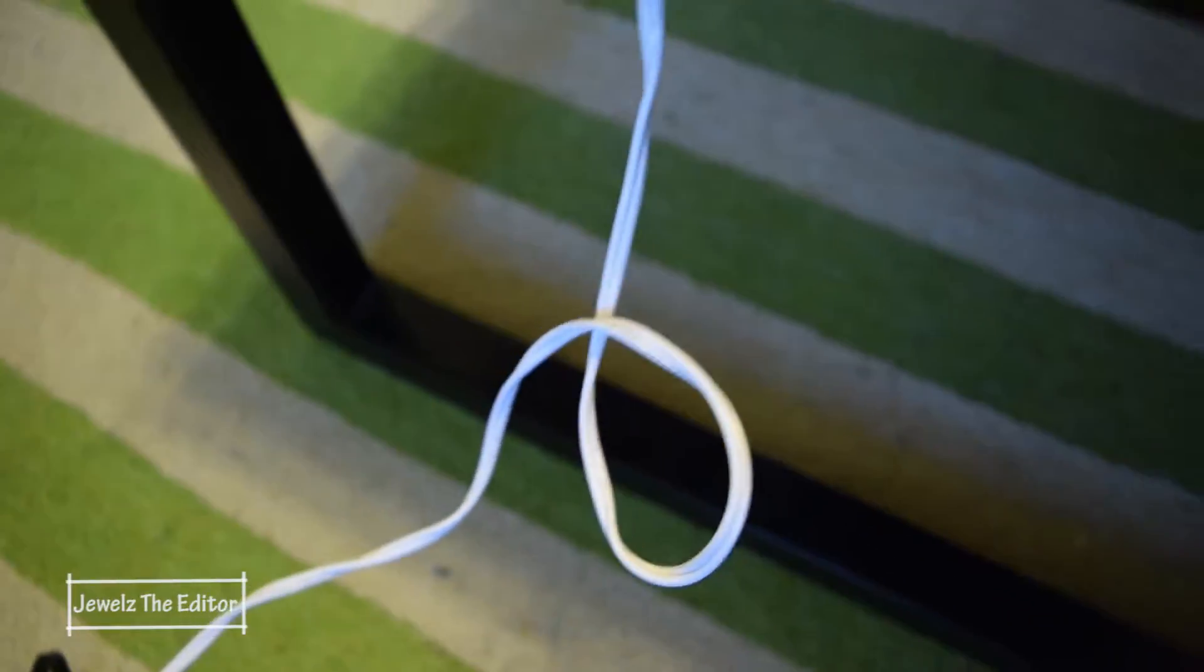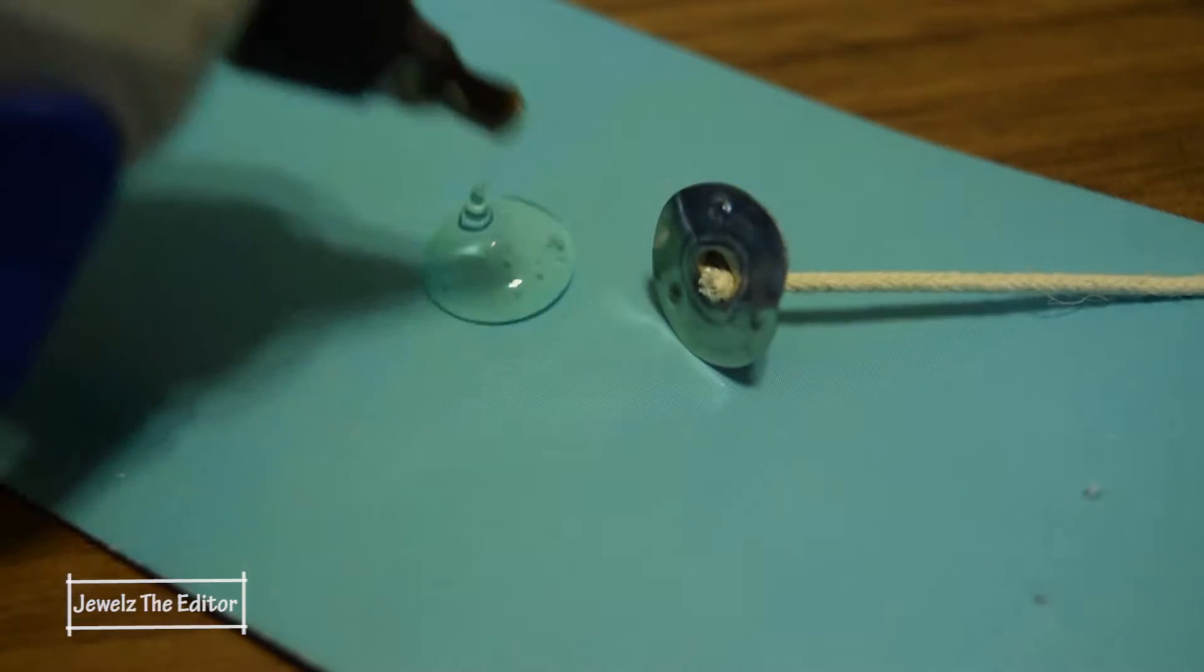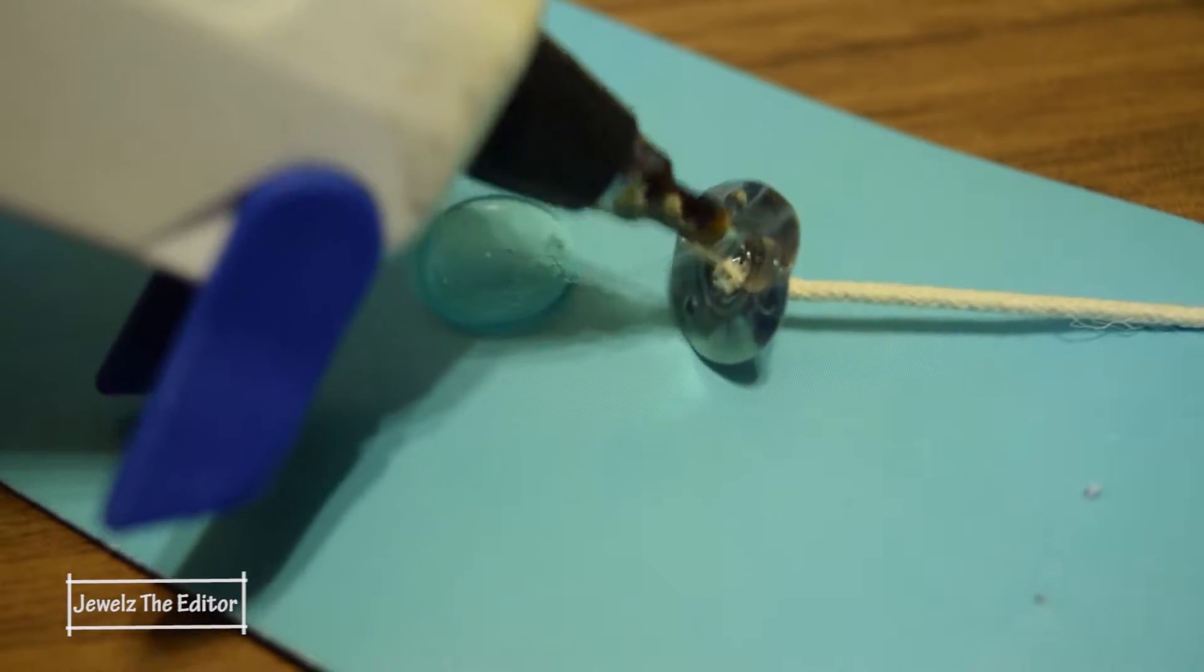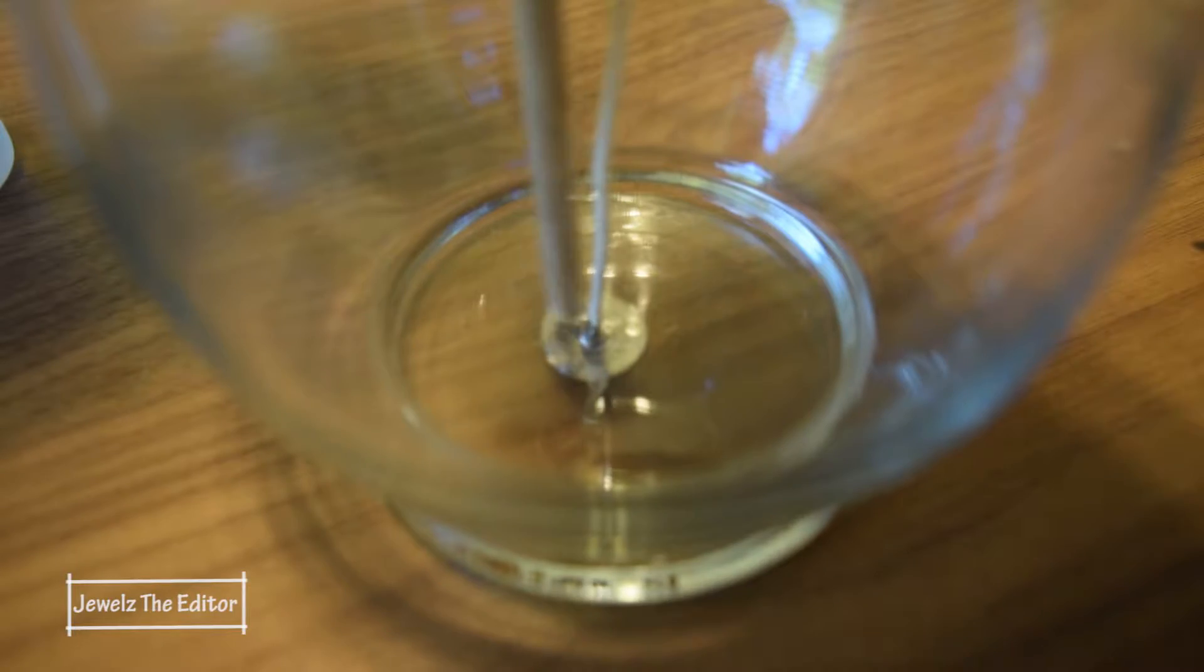Liz forgot to mention that you'll need pliers. Measure out the wick you'll need. Using the pliers, pinch the anchor shut. Then cut off the extra wick using scissors.